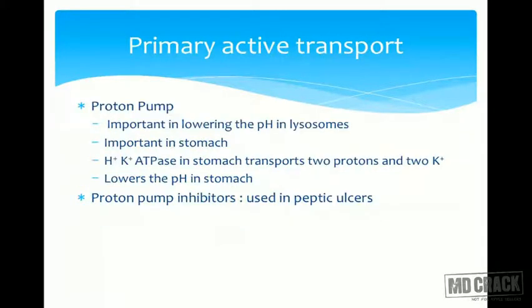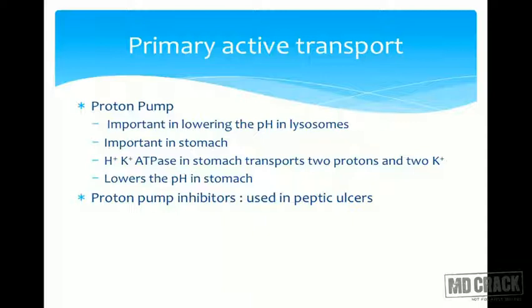Another example is the proton pump, important for lowering the pH within the stomach and also within any cell where we want to reduce pH — for example, within lysosomes. Lysosomes must have very low pH so their enzymes remain active. A proton pump within the lysosomal membrane pumps protons into the lysosome to achieve this.